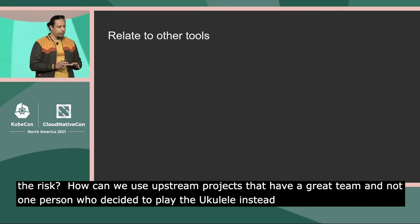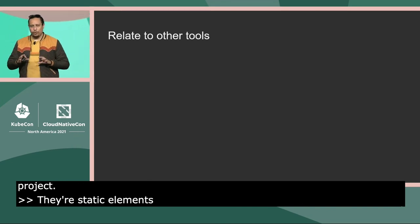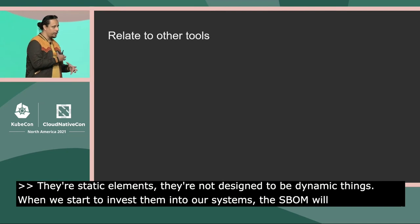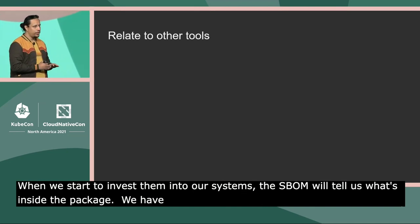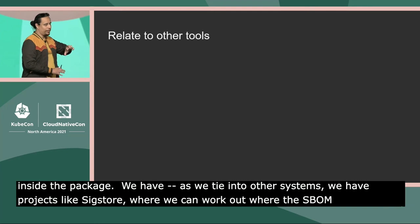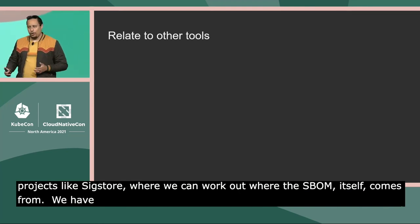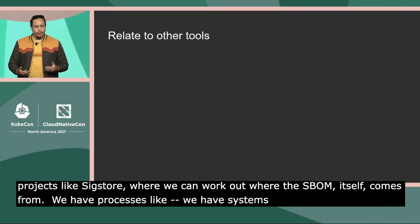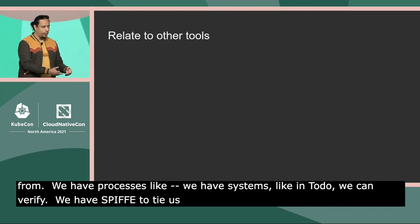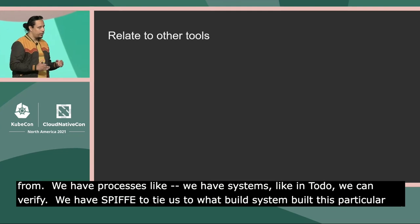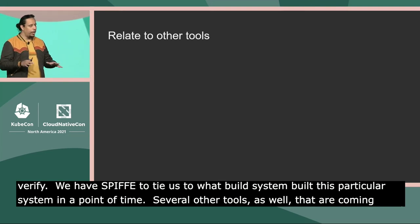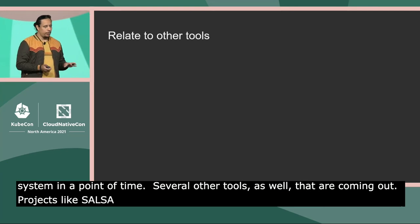SBOMs are static elements — they're not dynamic — so when we ingest them, the SBOM tells us what's inside the package, but it's only part of the story. Projects like Sigstore let us work out where the SBOM itself comes from, because it does no good to trust an SBOM without checking its provenance. Systems like in-toto let us verify things about the process; systems like SPIFFE tie that to which build system actually built this at a particular point in time. You're also seeing projects from OpenSSF like SLSA, and there's a lot of energy and focus being put here.